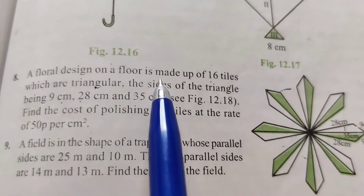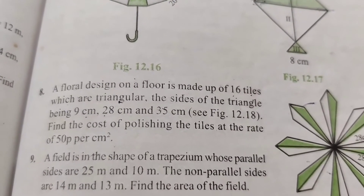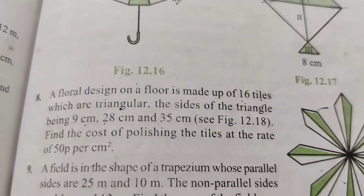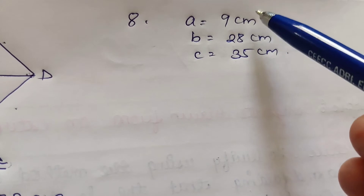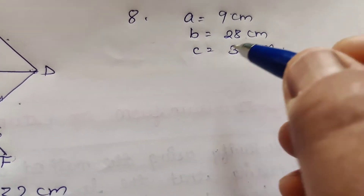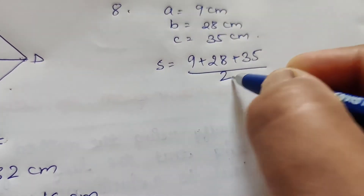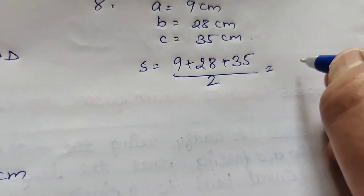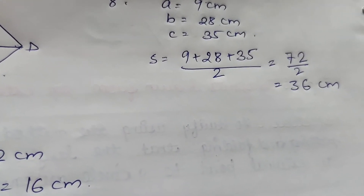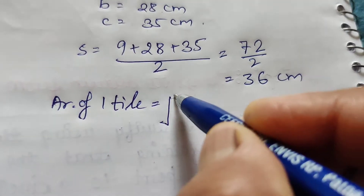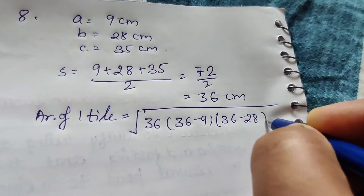Question number 8: A floral design on the floor is made up of 16 triangular tiles with sides 9 cm, 28 cm and 35 cm. Find the cost of polishing the tiles at the rate of 50 paisa per cm square. We find area of 1 tile: A equals 9 cm, B equals 28, C equals 35. S equals (9 plus 28 plus 35) by 2, giving 72 by 2 equals 36 cm.